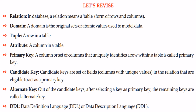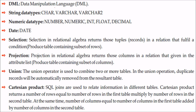In summary: in a database, a relation means a table — simply rows and columns. Domain refers to the atomic values that a column can take. A tuple is a row in a table. An attribute is a column in a table. The primary key is the column or set of columns that uniquely identifies a row. Candidate keys are all possible columns able to uniquely identify records; one is chosen as primary key. Keys not chosen as primary key are alternate keys. SQL has DDL — Data Definition Language — and DML — Data Manipulation Language.